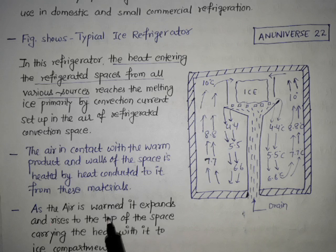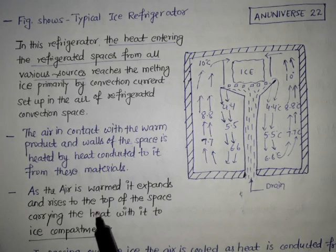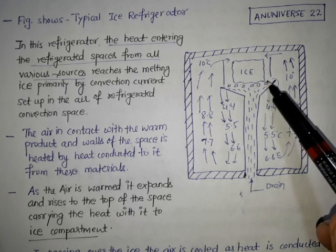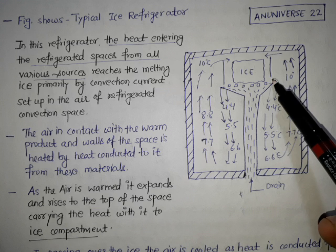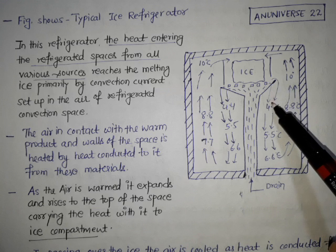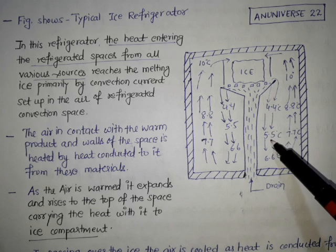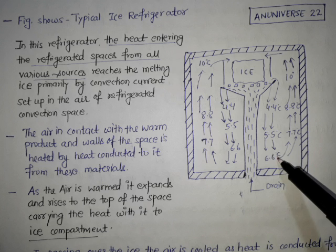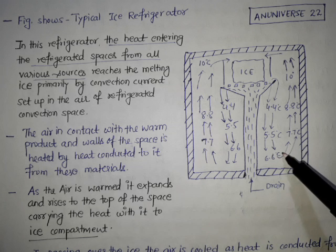As the air is warmed, it expands and rises to the top of the space carrying the heat with it to the ice compartment. As we can see, when the air is moving from top to bottom, its temperature is lower at the top. When it is moving down, its temperature is increasing by absorbing the heat. After absorbing the heat, it becomes light and moves up.